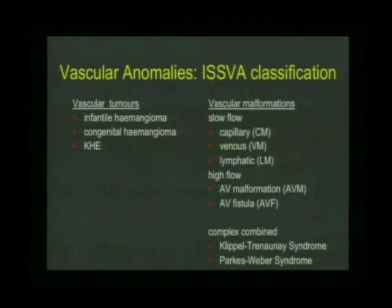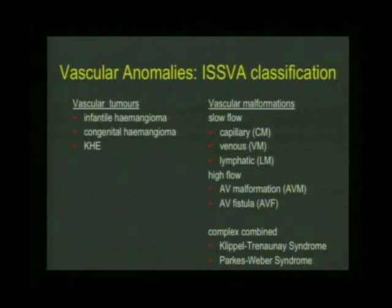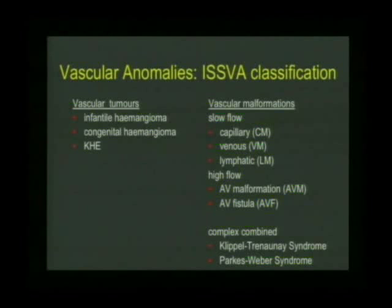The ISSVA group, back in 1996, decided to divide vascular anomalies into vascular tumors — which include the common hemangioma seen in many children, now called the infantile hemangioma — the congenital hemangioma, which is different to the infantile hemangioma, and another type of vascular tumor seen in infancy and childhood called KHE, or Kaposiform hemangioendothelioma. Examples of all of these will be shown shortly.